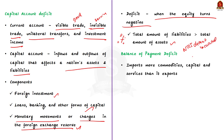Moving on to balance of payment deficit. Like trade deficit, balance of payment deficit is also a broad term. A balance of payment deficit means a nation imports more commodities, more capital, and more services than it exports.